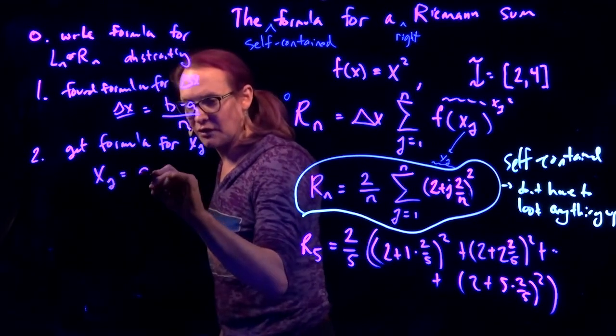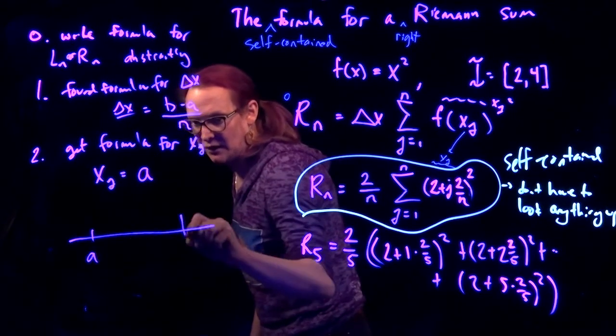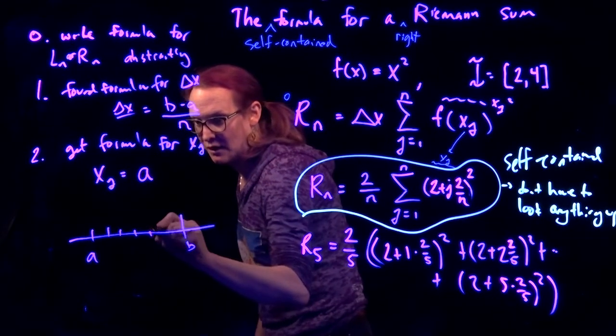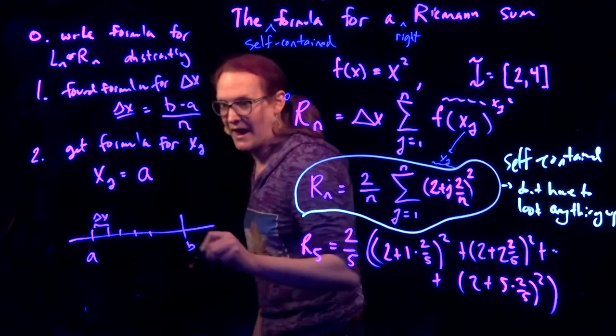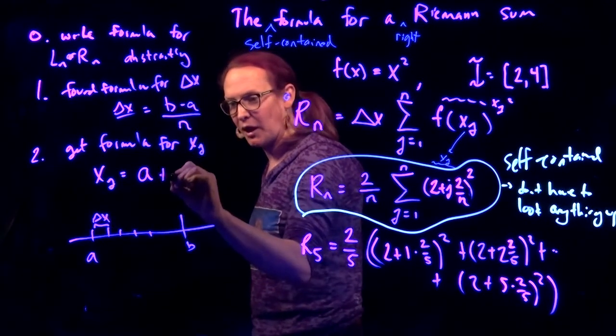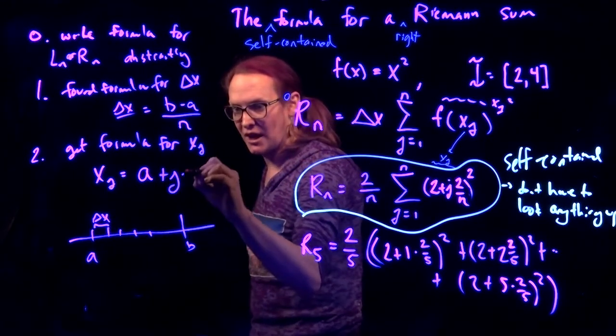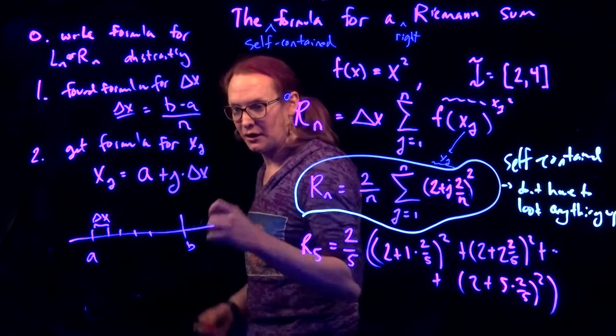We need to get a formula for x sub j. And A to B. We're stepping by delta x. We're always going to step by delta x. Plus how many times do you have to step to get to that thing? j times delta x.